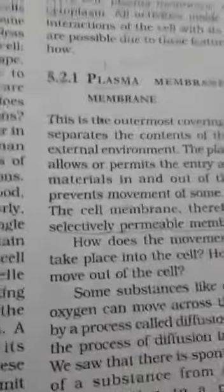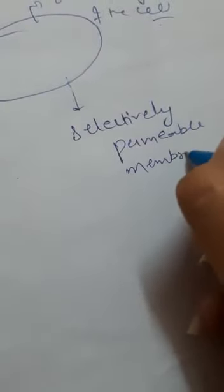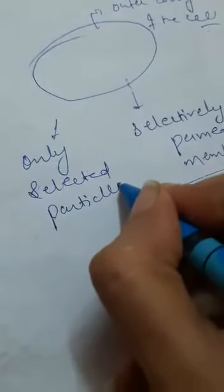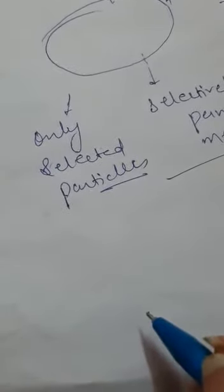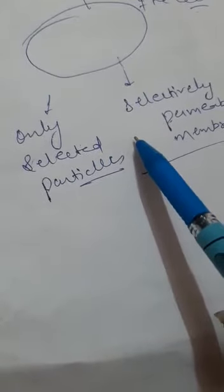Now what is the role of plasma membrane? First of all, it is the outer covering of the cell. Secondly, plasma membrane is also known as selectively permeable membrane, that means it allows only selected particles in or out of the cell. It permits the entry and exit of some materials in and out of the cell. That is why plasma membrane is called selectively permeable membrane.